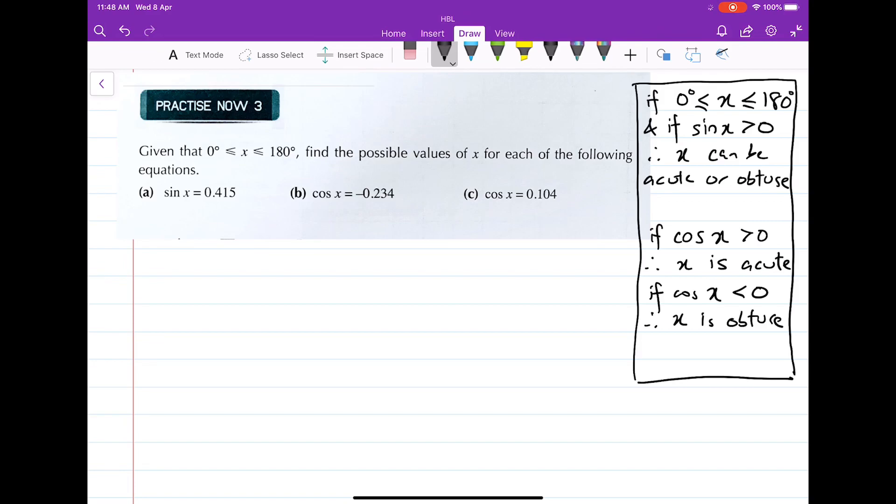So let's try part A. Now part A, for the angle between 0 degrees and 180 degrees, sine x is given as 0.415. So it goes like this,